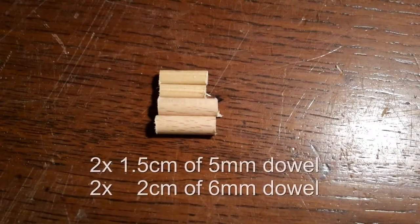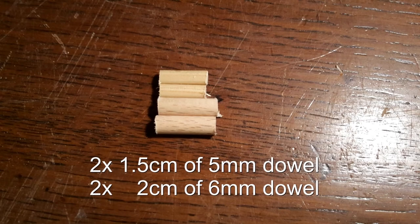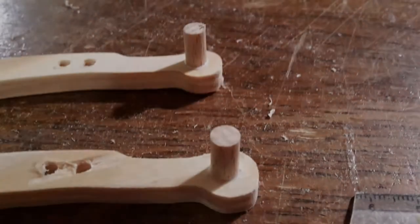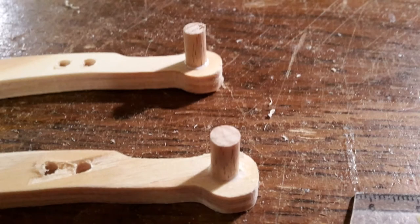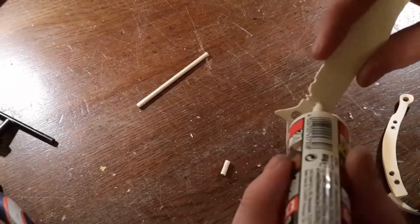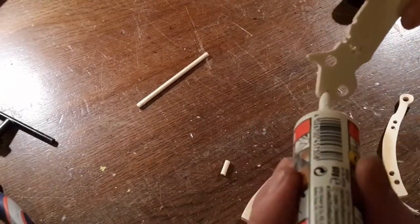To assemble the knife you need 2 x 1.5 cm of 5mm dowel and 2 x 2 cm of 6mm dowel. Insert the 6mm pins into the handle pieces. Insert the 5mm pins into the blade.